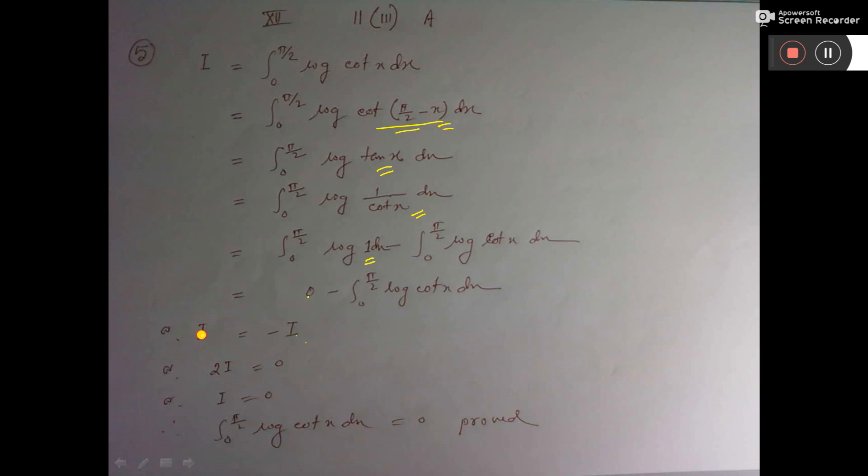So this minus i after going that side will be 2i and here 0. So i is equal to 0 by 2, that is equal to 0. Then put the value of i. So we are getting this is equal to 0. And it is proved.